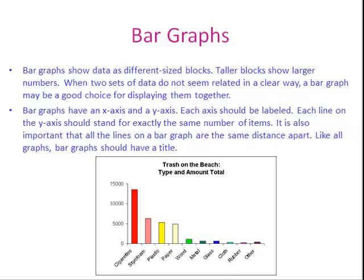Bar graphs have an x-axis, which is horizontal, and a y-axis, which is vertical. Each axis has to be labeled. Each line on the y-axis should stand for exactly the same number of items. It's also important that all the lines on a bar graph are the same distance apart. Like all graphs, bar graphs should have a title.